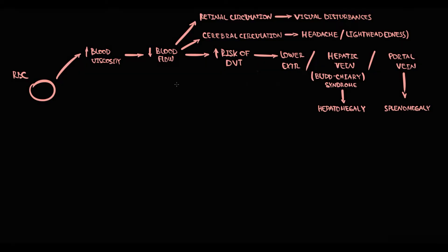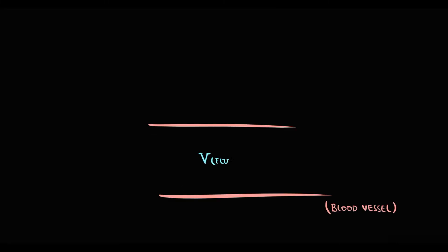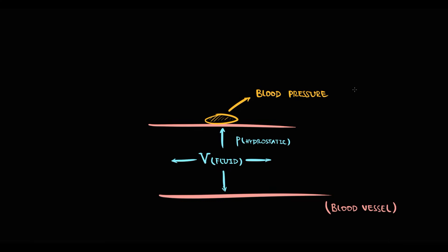With increasing red blood cells, total blood volume increases, and increasing total blood volume causes hypertension. Blood volume has hydrostatic pressure that acts in all directions, including on blood vessel walls — when we measure blood pressure, we measure exactly this hydrostatic pressure. The higher the blood volume, the higher the hydrostatic pressure of the blood.